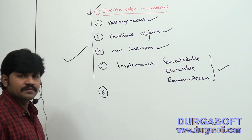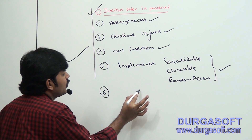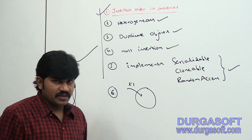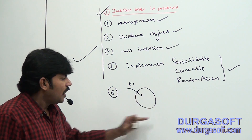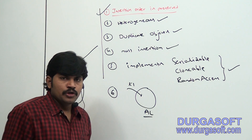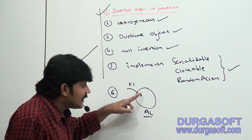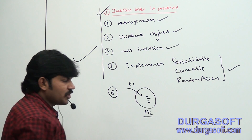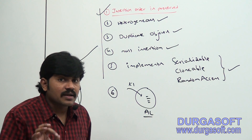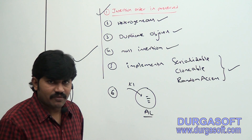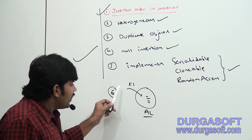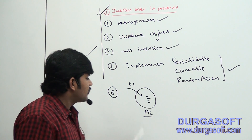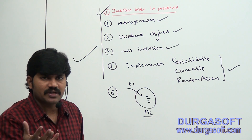While one thread is performing a read operation — iterating — on the normal ArrayList object, if any other thread tries to modify the underlying ArrayList object, immediately you will get a ConcurrentModificationException. We covered this in the last videos.